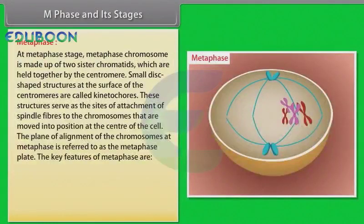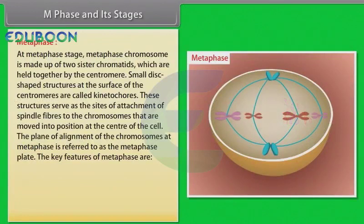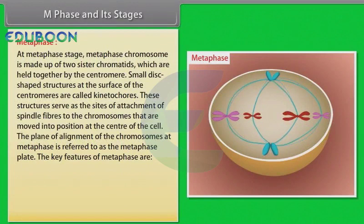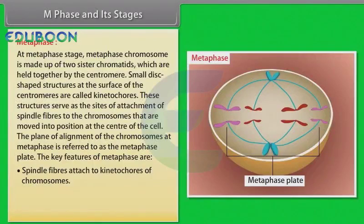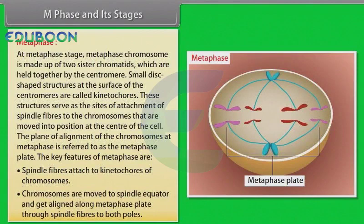The second stage of mitosis is called metaphase. At this stage, metaphase chromosome is made up of two sister chromatids which are held together by the centromere. Small disc-shaped structures at the surface of the centromeres are called kinetochores. These structures serve as the sites of attachment of spindle fibers to the chromosomes that are moved into position at the center of the cell. The plane of alignment of the chromosomes at metaphase is referred to as the metaphase plate. The key features of metaphase are: spindle fibers attached to kinetochores of chromosomes, chromosomes are moved to spindle equator and get aligned along metaphase plate through spindle fibers to both poles.